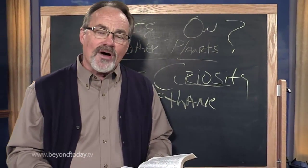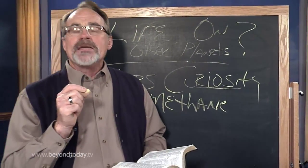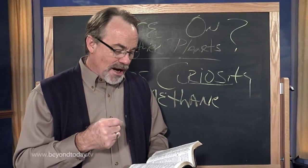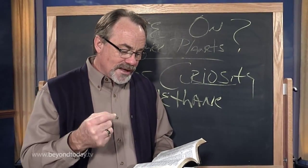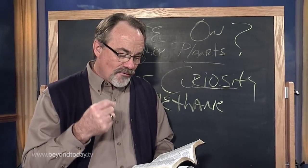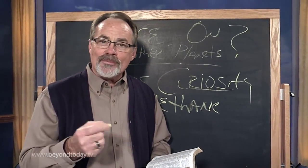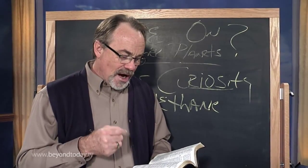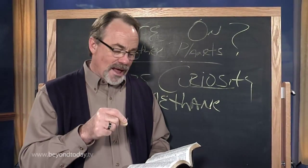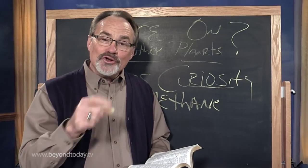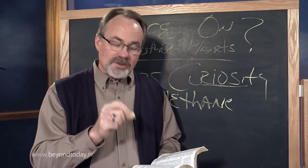In Isaiah 45 and verse 18, it says this from God: For thus says the Lord who created the heavens, who is God, who formed the earth and made it. A direct statement corroborated by Genesis 1:1, that God formed the earth and He made this planet. He's made all the other planets too, but this one is the one that has life as we know it.